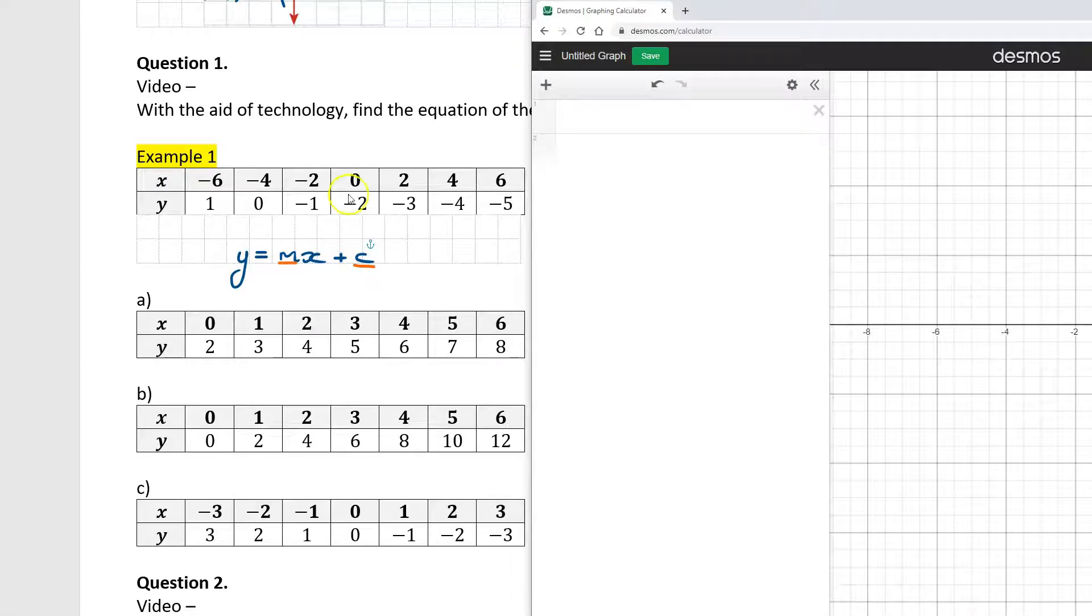Now to do it, all we need to do is click on this plus here, and then I'm going to go table, and we're going to input the table that we see in the document over here into Desmos. What that will do is it will plot all of our points, and it will make it such that we're able to see a visual representation of what the line will look like. So putting those points in.